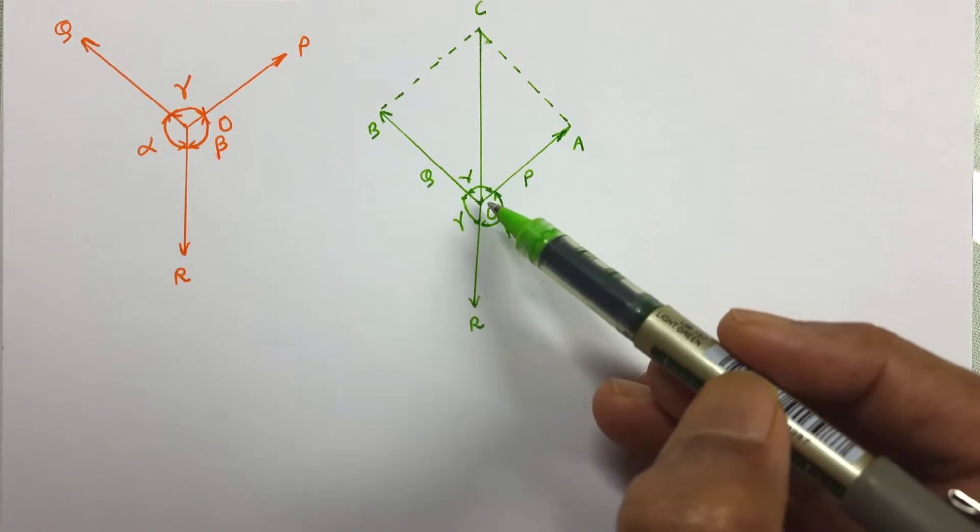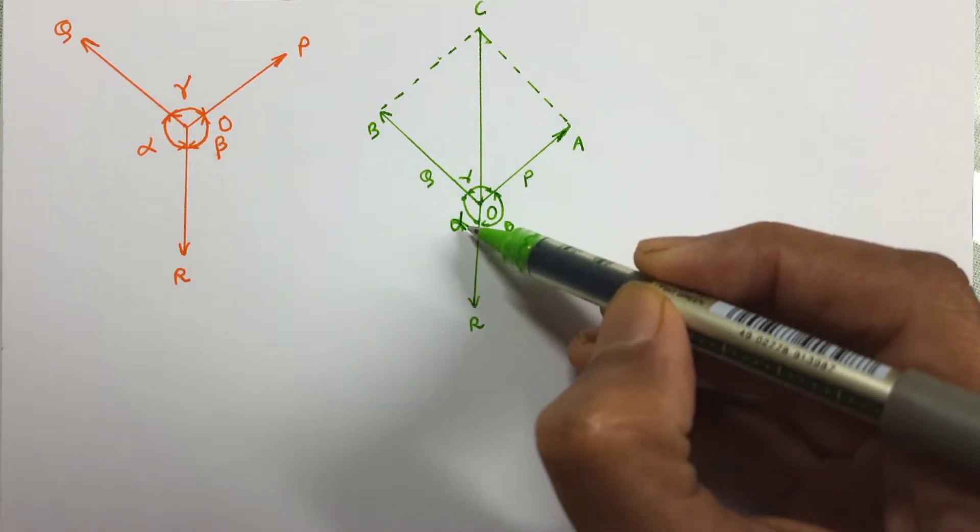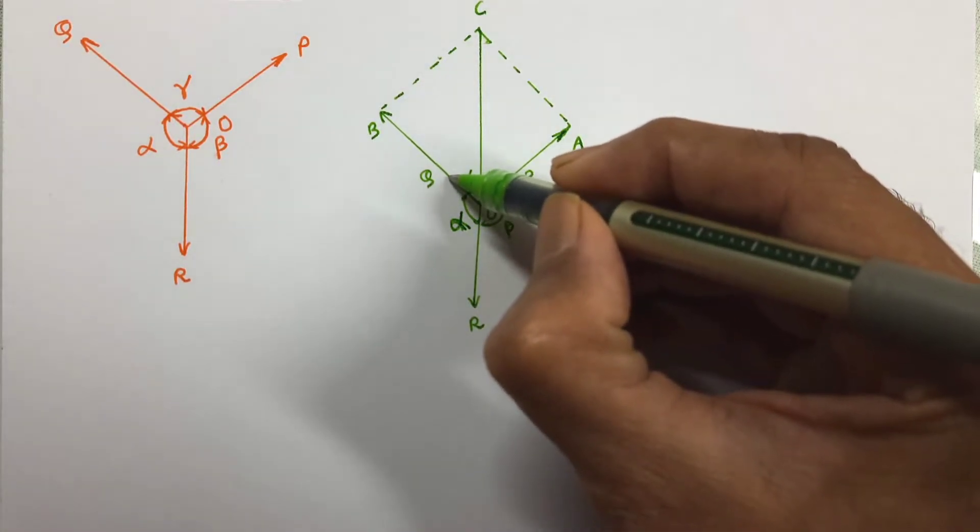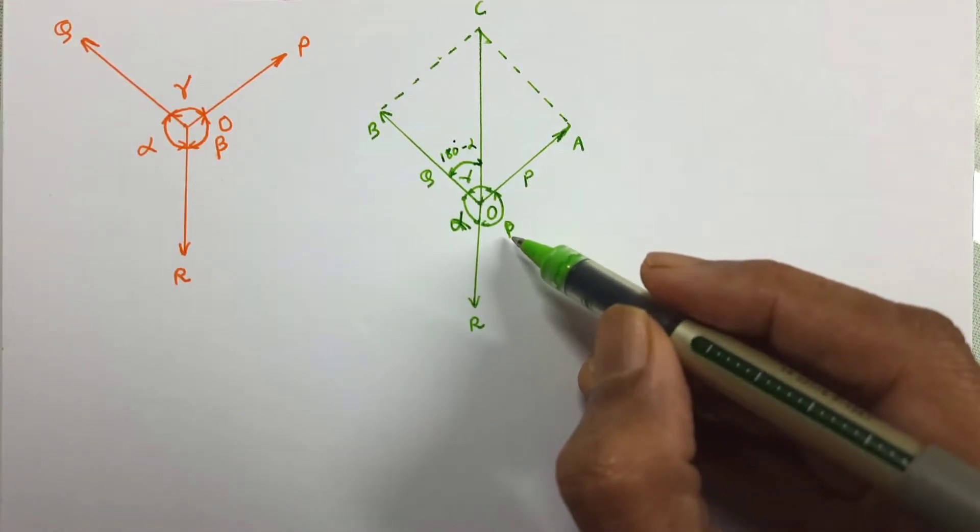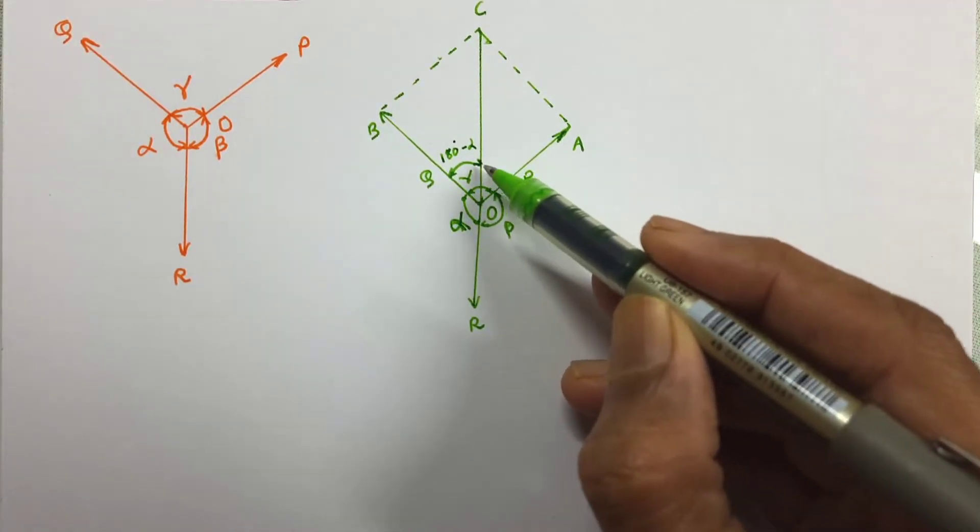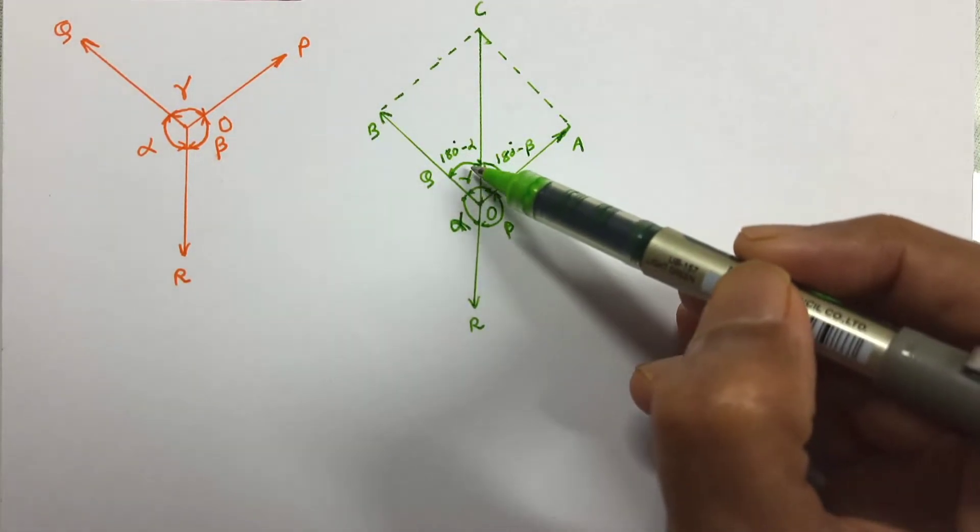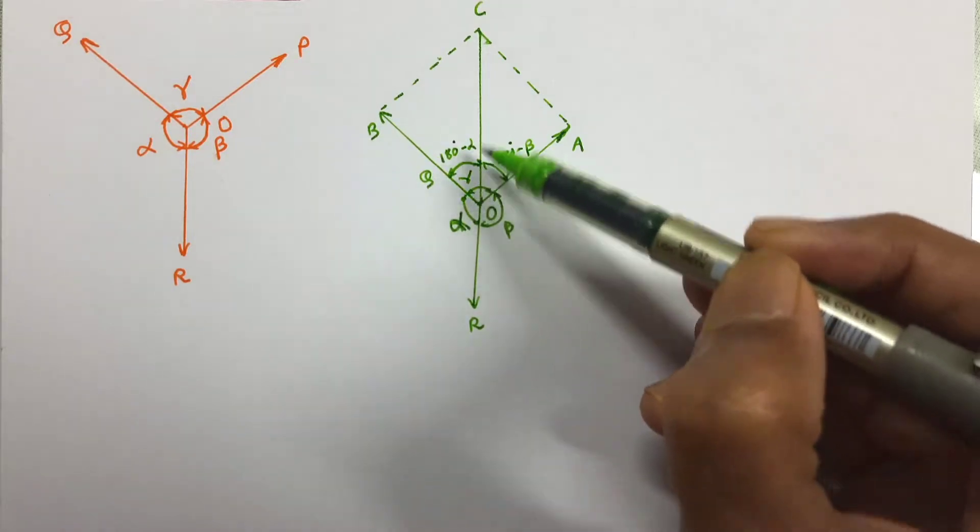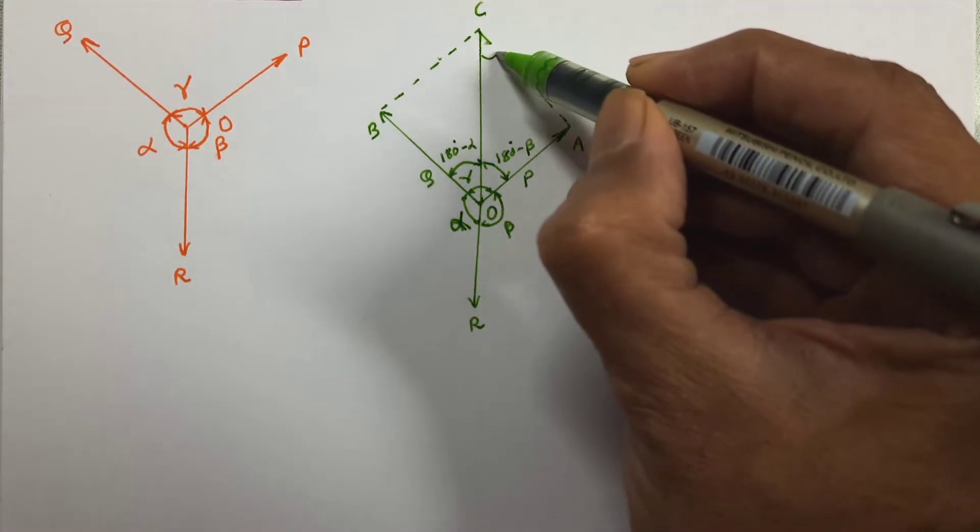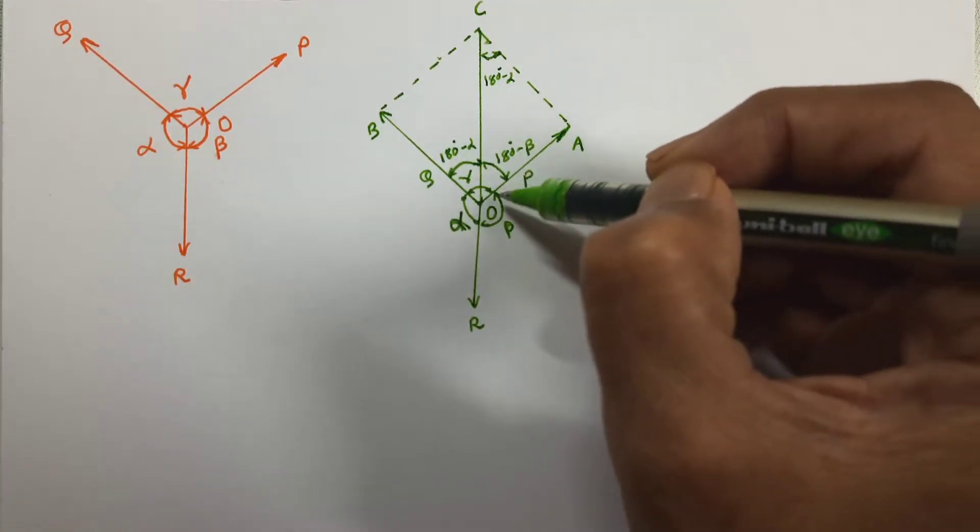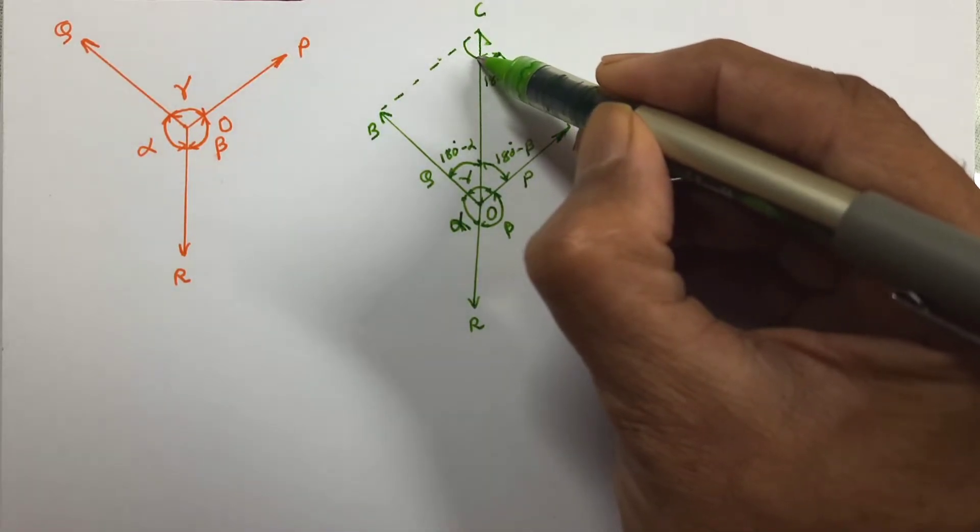Now complete the parallelogram OACB. Now from geometry, this angle is alpha, so we can write this angle is 180 minus alpha. Here this angle is beta, so this angle will be 180 minus beta. From geometry, this angle is 180 minus alpha, so we can write this angle as 180 minus alpha. Same way, this angle is 180 minus beta, so this angle will also be 180 minus beta.